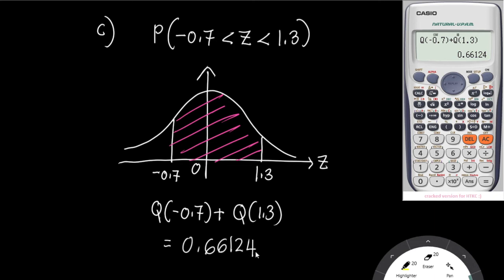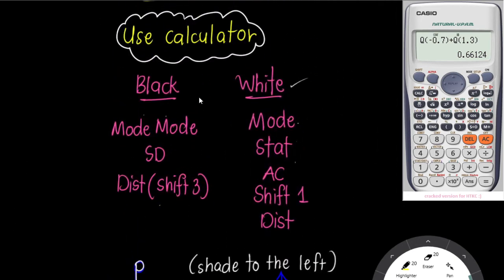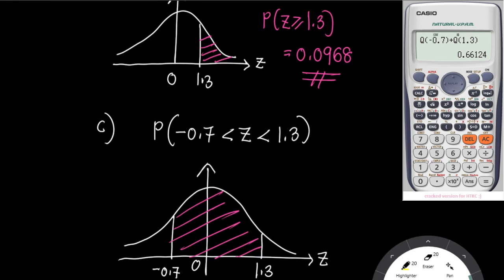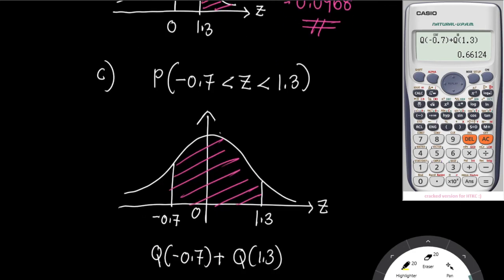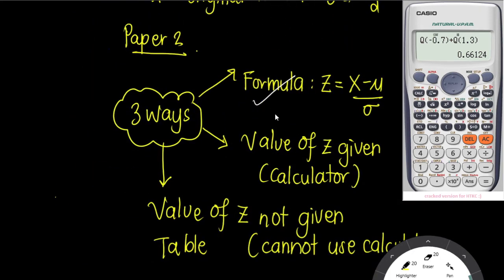If you're using the black calculator, it's the same method — just follow the setup steps for your specific model. You can also use the table method, but teacher recommends using the calculator to save time in exams. Now let's look at the last type of question: value of Z not given, where we cannot use the calculator — we must use the table.